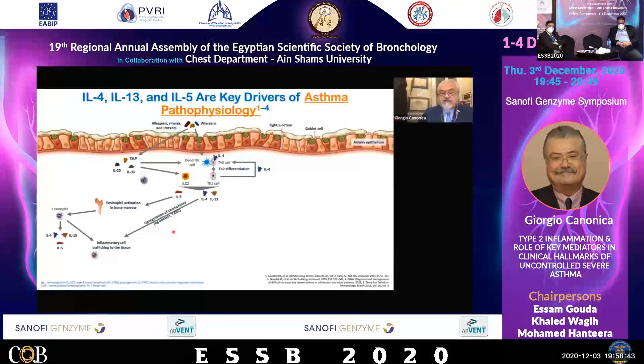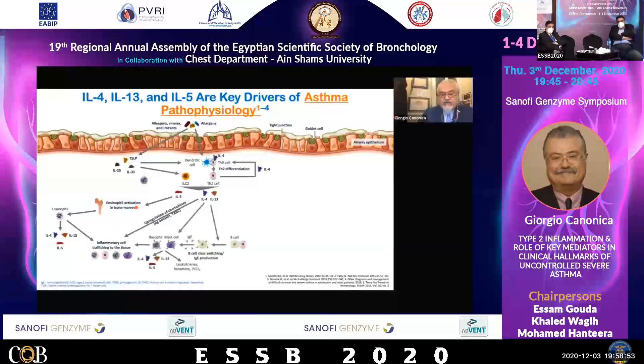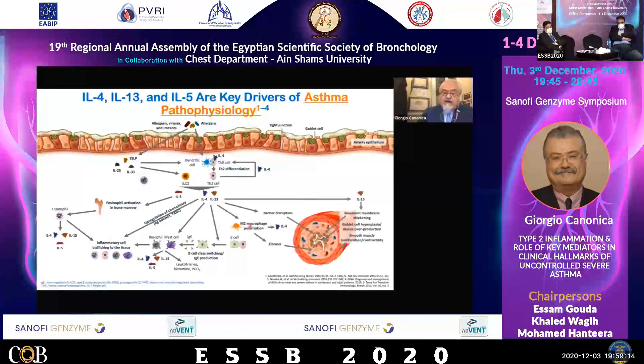Keep in mind also the survival of eosinophils — there is an autocrine effect due to IL-5. IL-4 and IL-13 have been shown to induce mast cell activation and basophil activation, and also the switching of B cells to IgE production. These cytokines are acting on barrier disruption as well.